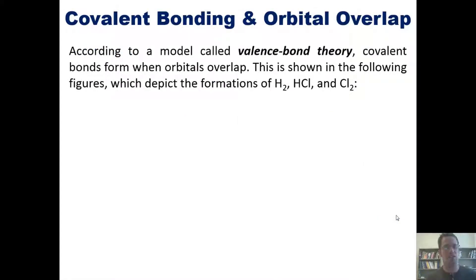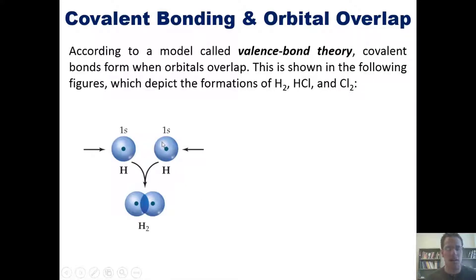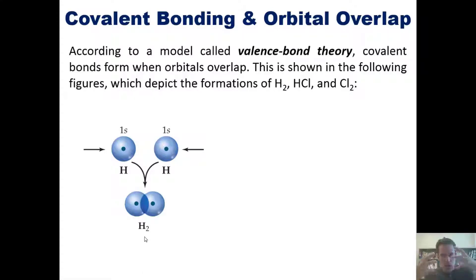According to a model called valence bond theory, covalent bonds form when orbitals overlap. This is shown in the following figures, which depict the formation of hydrogen gas H2, HCl, and Cl2. When you've got two different hydrogen atoms, each has a 1s atomic orbital. When they get together to form H2, those atomic orbitals overlap and form a merged molecular orbital for the molecule of H2.